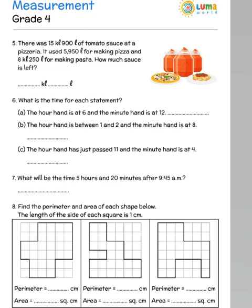There was 15 kiloliters 900 liters of tomato sauce at a pizzeria. It used 5950 liters for making pizza and 8 kiloliters 250 liters for making pasta. How much sauce is left? Remember the initial amount was this one which is given. It used up these amounts, which means 5950 liters and 8 kiloliters 250 liters, which means this is 5 kiloliters 950 plus 8 kiloliters 250. So you add up these two and find out how much was used and subtract it from the 15,900 which you have.